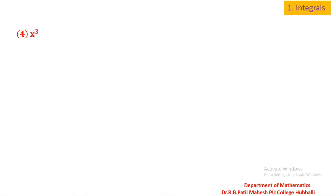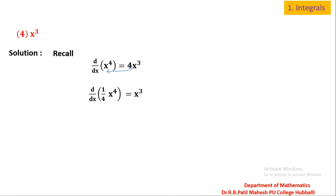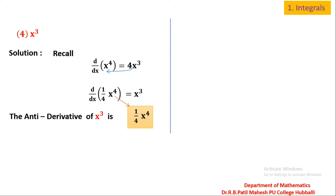Question number 4: x³. Find the anti-derivative of x³. Recall d/dx of x⁴ because differentiating x⁴ gives 4x³. I want only x³, so I take 4 to the left side: d/dx of (1/4)x⁴ is equal to x³. It means the derivative of (1/4)x⁴ is x³, and therefore the anti-derivative of x³ is (1/4)x⁴.